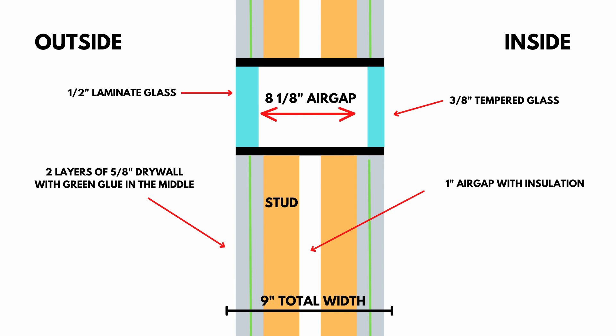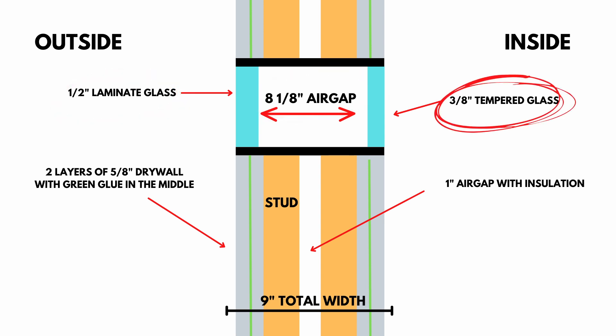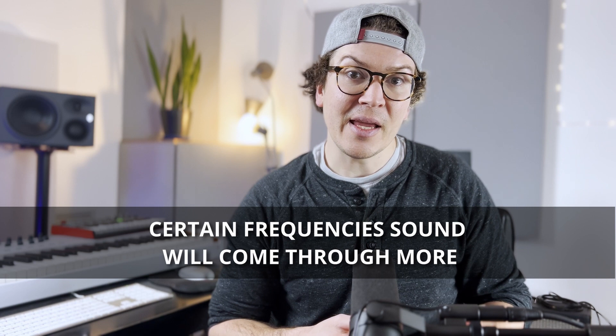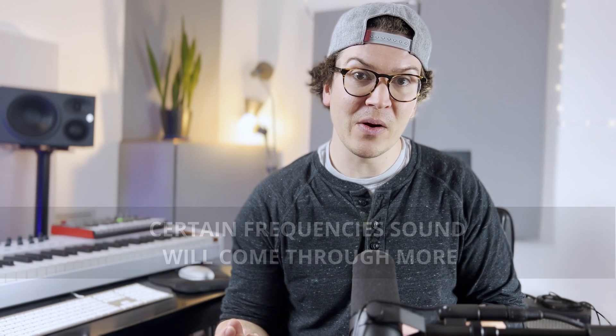So when sound travels from the outside, hits that outside window and comes through, it's going to resonate the airspace, which is then going to resonate that inside window. What this does is cause a dip in the transmission loss — meaning in plain English, at certain frequencies there will be a dip in how much that frequency is let through the window.